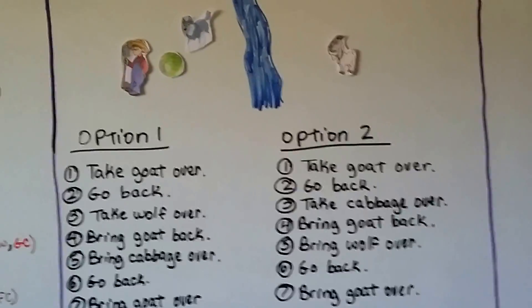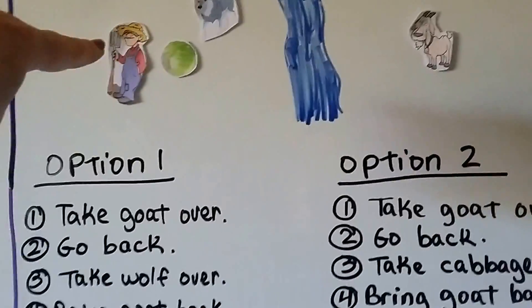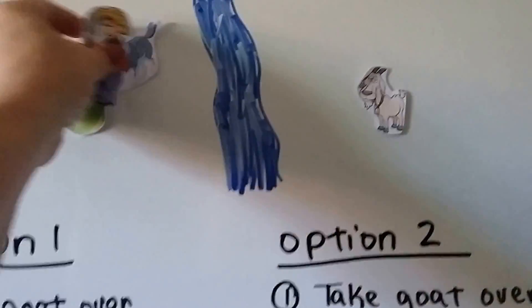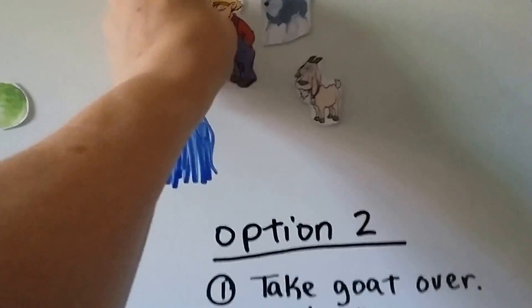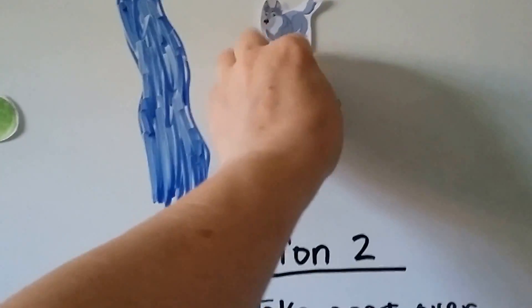So let's go through each one of these. He's brought the goat over and he came back. Now he's going to take the wolf over, but he can't leave these together. He can bring one thing with him each time he goes back and forth, so he's going to bring the goat back.